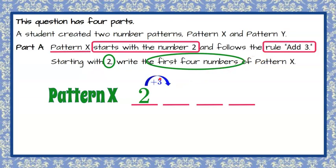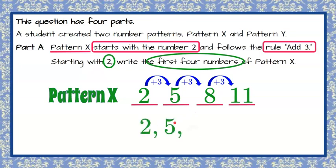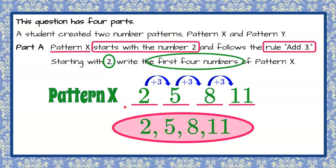So the rule is to add 3. So 2 add 3 is 5. The next number is going to be 5 add 3 is 8. Then using the rule, 8 add 3 is 11. So our pattern is 2, 5, 8, and 11 for pattern X.